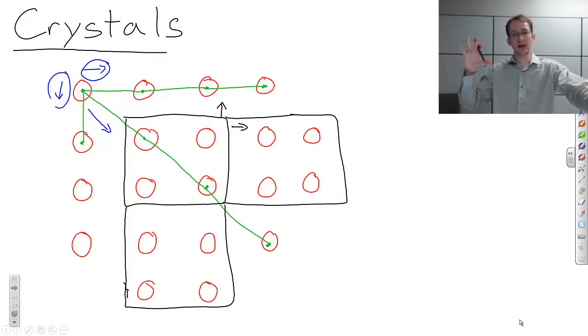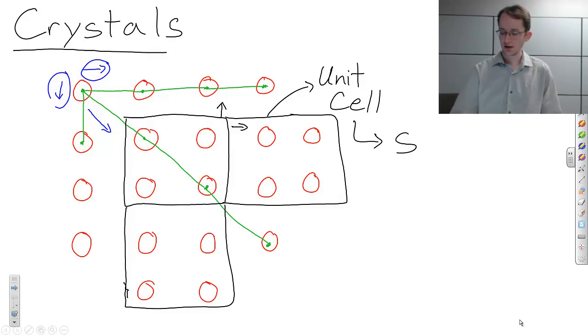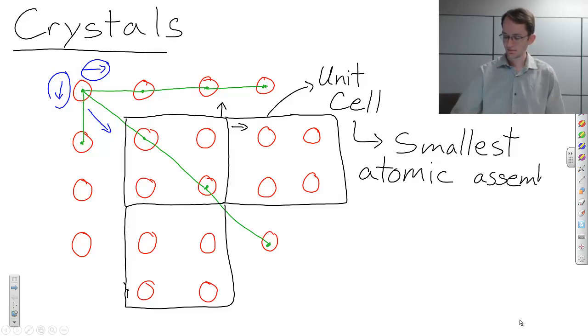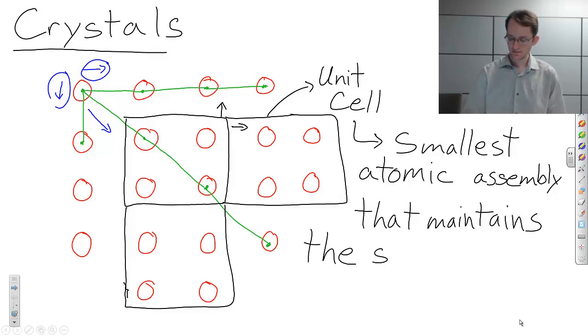And so I can fill three-dimensional space with this subunit of atoms. But if I were to cut this even smaller, I wouldn't be able to repeat. And this smallest unit is something we call a unit cell. And the unit cell is the smallest atomic assembly that maintains the symmetry of the crystal.